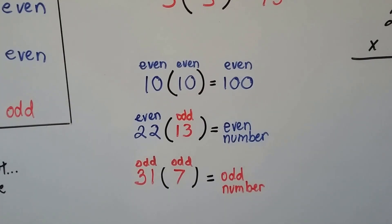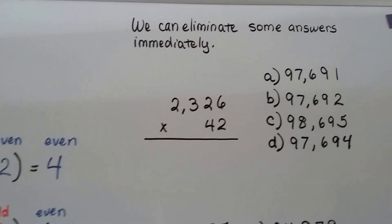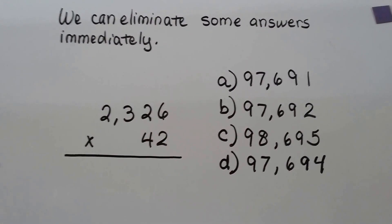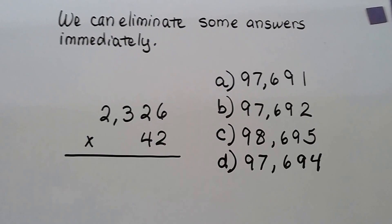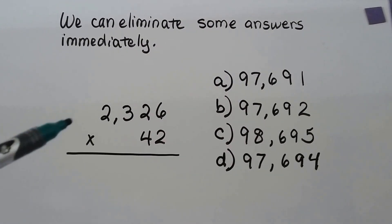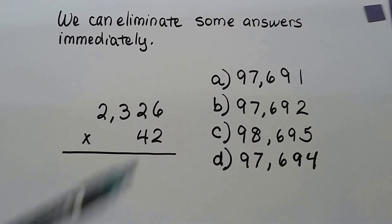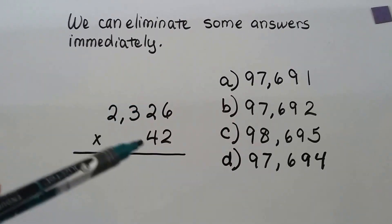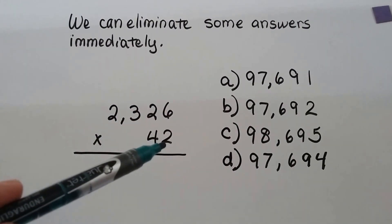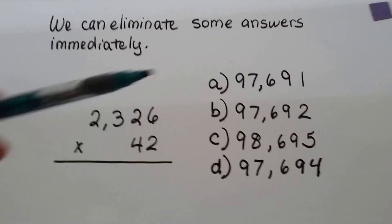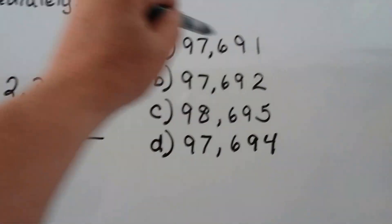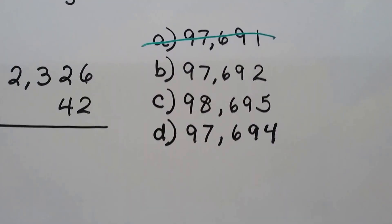Now, I'm going to show you how this is going to help you in a test. We can eliminate some answers immediately. So let's say you've got this on a test, and these are the possible answers on the answer sheet. You've got 2,326 times 42. Well, the six in the ones place tells me it's even. The two in the ones place tells me it's even. Our answer is going to be even. So can A be the answer? It ends in a one. That's odd. So no, that's not an answer.